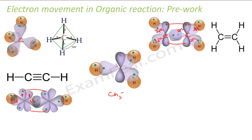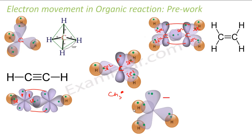This is a normal CH3 free radical with no charge. If you see the structure, this is all sp2 hybridized — this is my sp2, this is my sp2, and this is my sp2. All three sp2 hybrid orbitals are linked to hydrogen, and the p orbital has one electron. This is my CH3 radical.